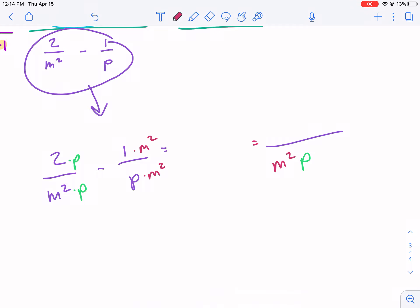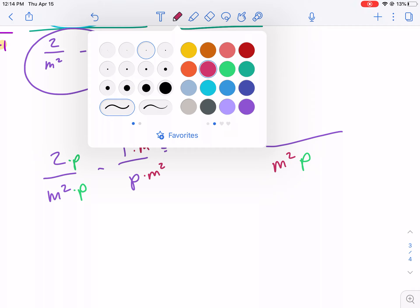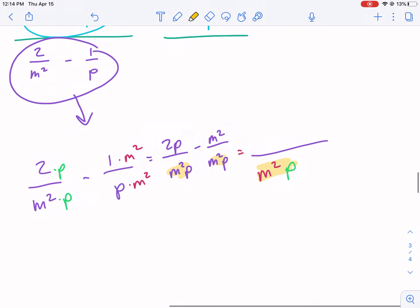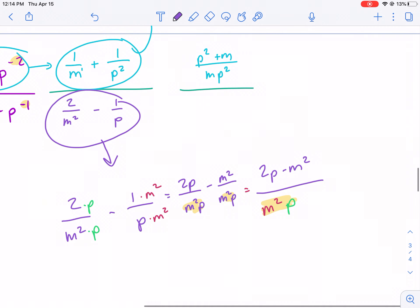Now I have two fractions that have a common denominator. The first fraction being 2p over m squared p minus m squared over m squared p. Notice how the denominators are the same. So now we can go ahead and put this as our final denominator and simply subtract the top 2p minus m squared. So now we have 2p minus m squared over m squared p.